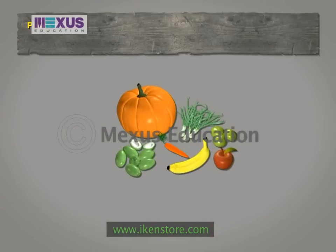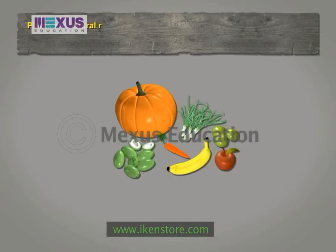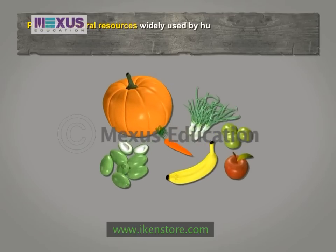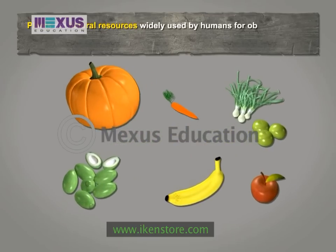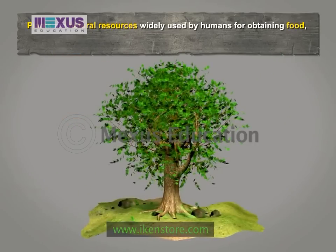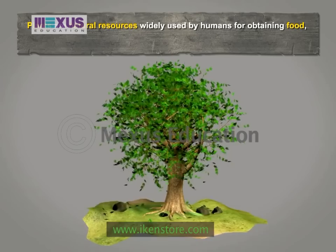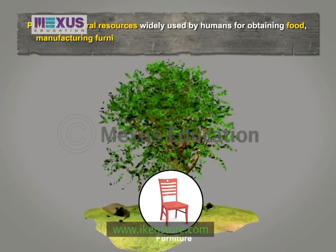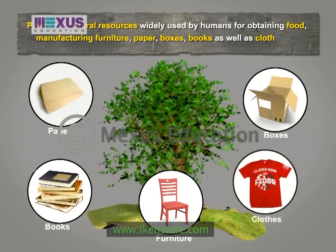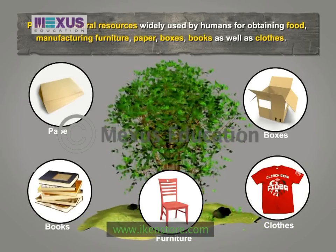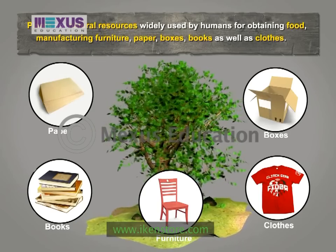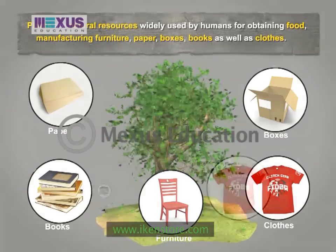There are different ways in which we use natural resources. For instance, we use plants for food in the form of fruits and vegetables. The wood that we get from trees is used for manufacturing furniture, paper, boxes, books as well as clothes. All these are products that we use on a daily basis and also on a very large scale.